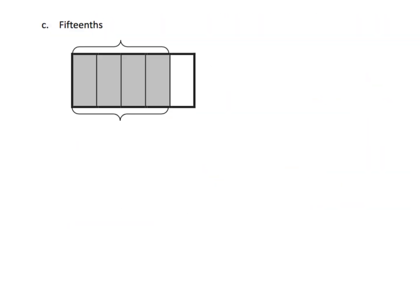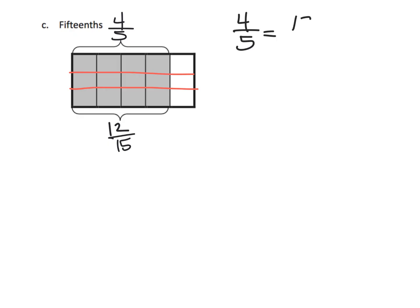So let's put this into practice. We're going to start with four-fifths, and it says we want fifteenths. So that means I'm going to cut each of those fifths into three parts, and that's going to give us fifteenths, because three times five is fifteen parts. So those four-fifths have turned into fifteenths, and instead of having four-fifths, we now have twelve-fifteenths. We can see that four-fifths is equal to twelve-fifteenths. There's a lot of writing and this feels a little laborious, so I'm going to simplify a bit.